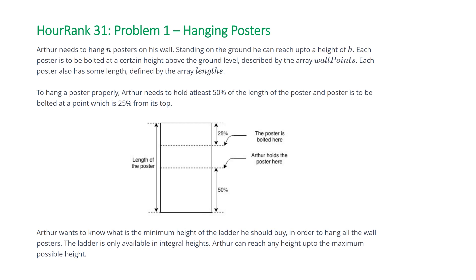The problem states Arthur needs to hang n posters on his wall. Standing on the ground he can reach up to a height of h. Each poster is to be bolted at a certain height above the ground level, described by the array wallpoints. Each poster also has some length defined by the array lengths. To hang a poster properly, Arthur needs to hold at least 50% of the length of the poster, and the poster is to be bolted at a point which is 25% from its top. Arthur wants to know what is the minimum height of the ladder he should buy in order to hang all the wall posters. The ladder is only available in integral heights, meaning integers.